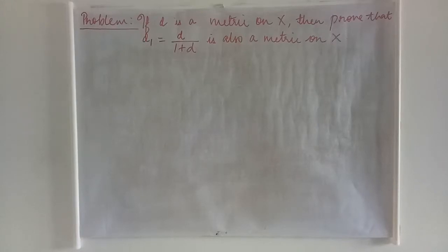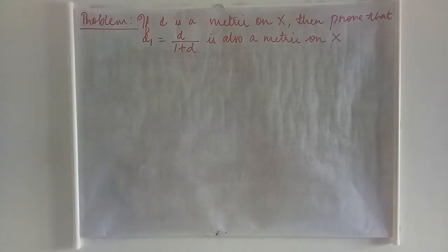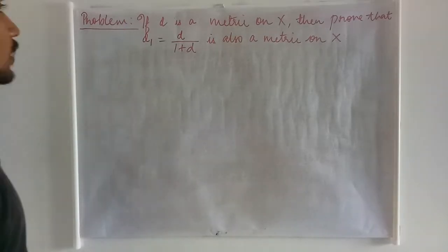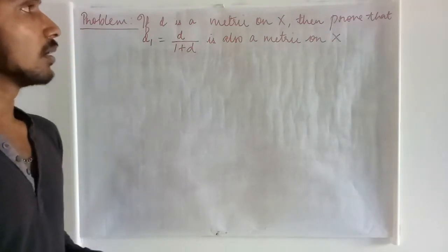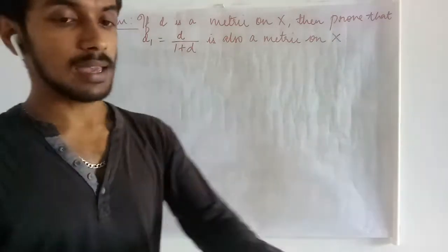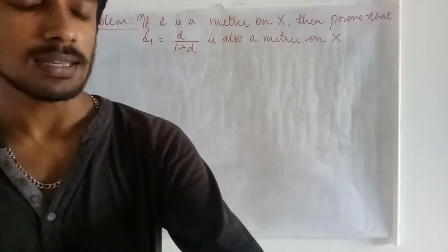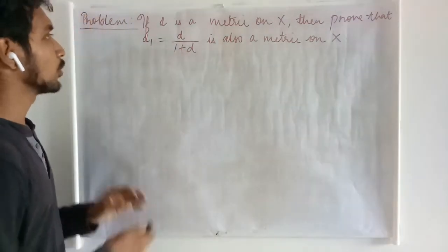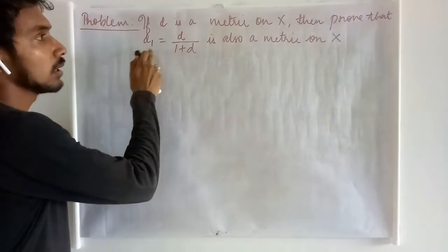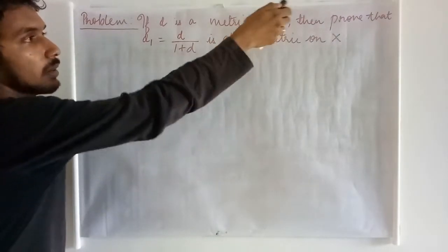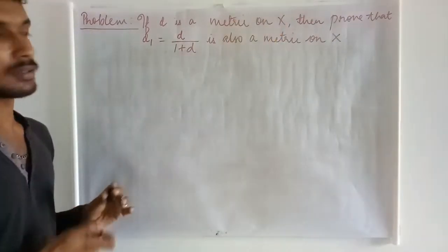In continuation to the previous lectures, in this lecture also, we are going to prove something on metrics and metric spaces. Here we are given that D is a metric on any set X, and we are asked to prove D1 is also a metric on X.